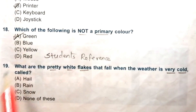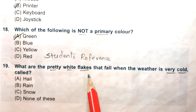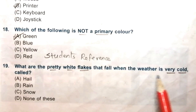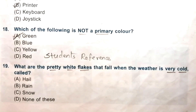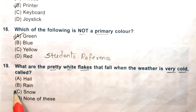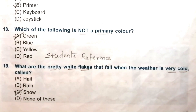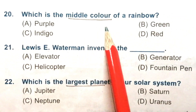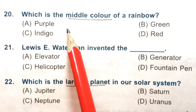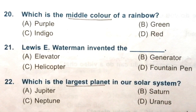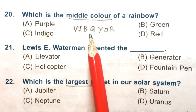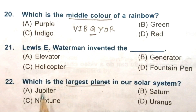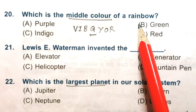Question 18: Which of the following is not a primary color? Green, blue, yellow, or red. The answer is A, green. Question 19: Which is the middle color of the rainbow? Using VIBGYOR, G means green, so the answer is B, green.